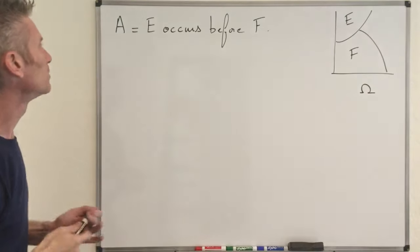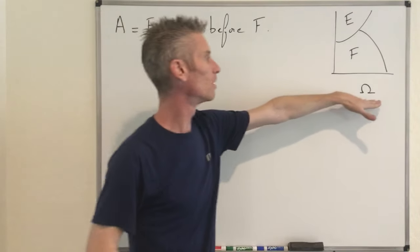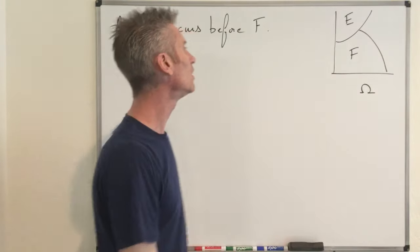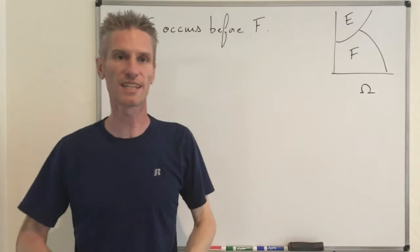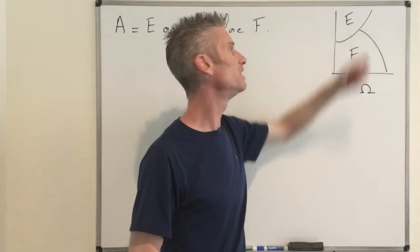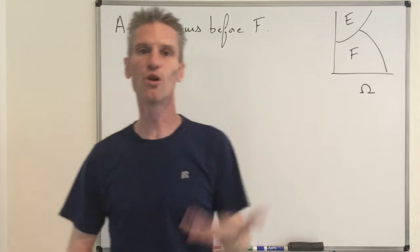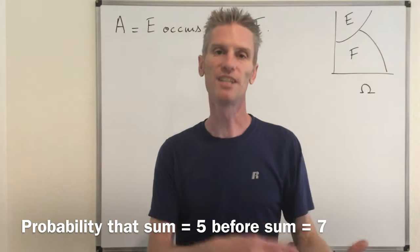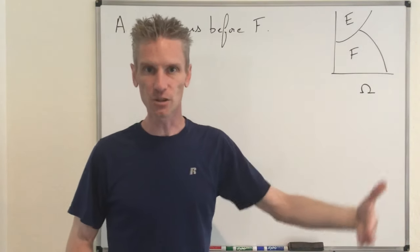Okay, so it turns out that we already solved this problem in a specific example. Here we have a general experiment and we have two mutually exclusive events that can be whatever. But in a previous video, we already answered the question in the context where this first experiment consists in rolling two dice. And E is the event that the sum is five and F was the event that the sum is seven. The goal was to compute the probability if you roll those two dice in sequence, what is the probability that you will get a five before a seven?